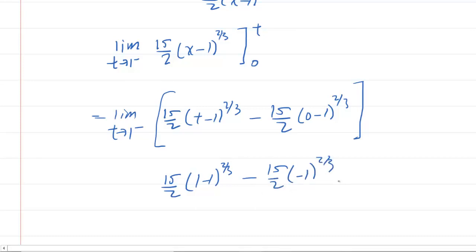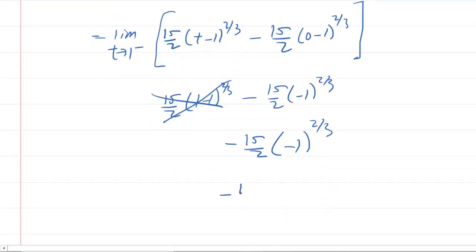Now, for the first expression here, 1 minus 1 is 0. So this whole thing is going to zero out. And then you're left with negative 15 halves multiplied by negative 1 to the 2 thirds. Now, you could use a calculator here or you could recall that you can rewrite negative 1 to the 2 thirds power as the cube root of negative 1, all of which would be squared. Now, the cube root of negative 1 is negative 1 and then negative 1 squared is positive 1. So you end up with negative 15 halves times 1, which, of course, is negative 15 halves.